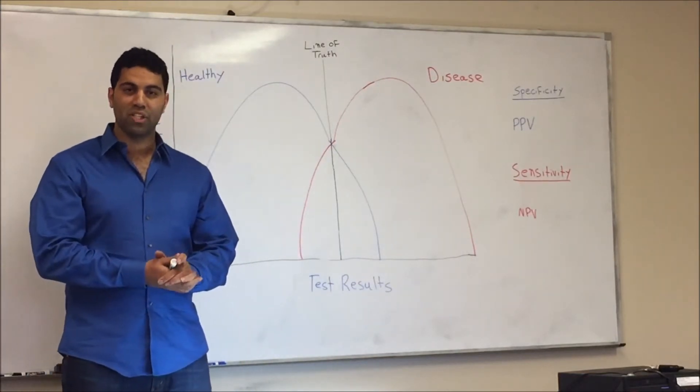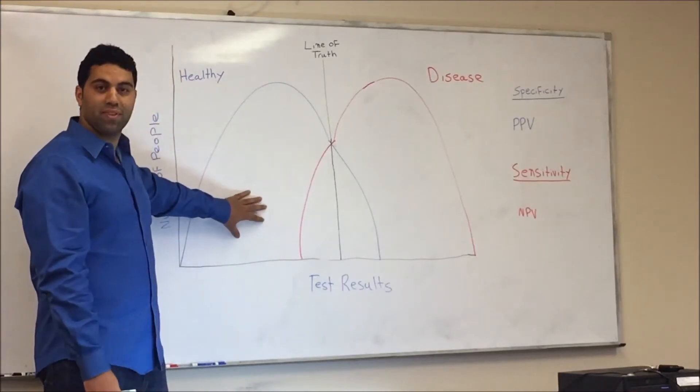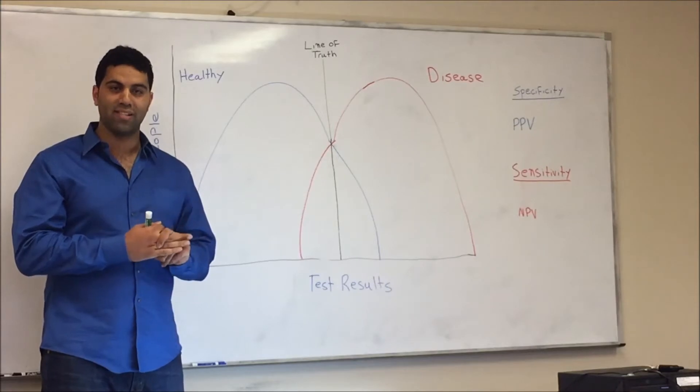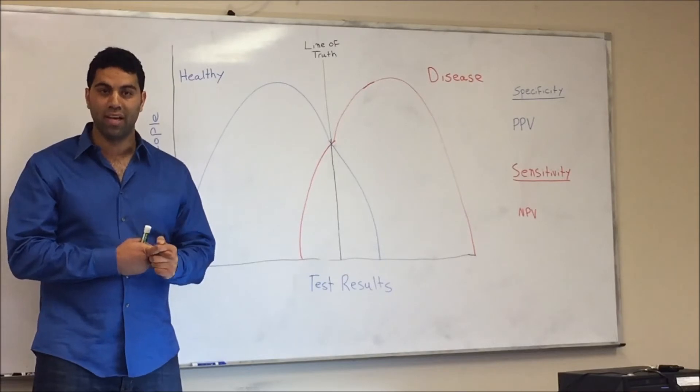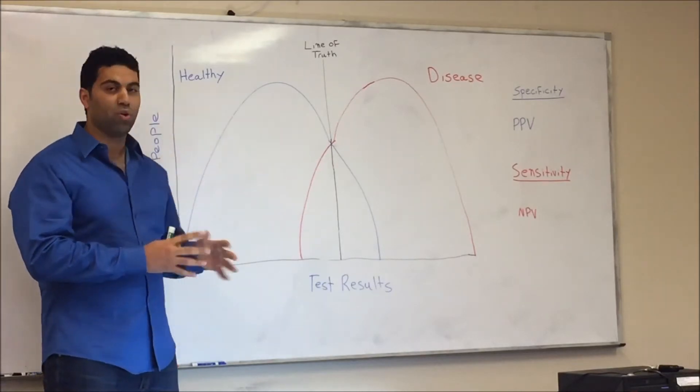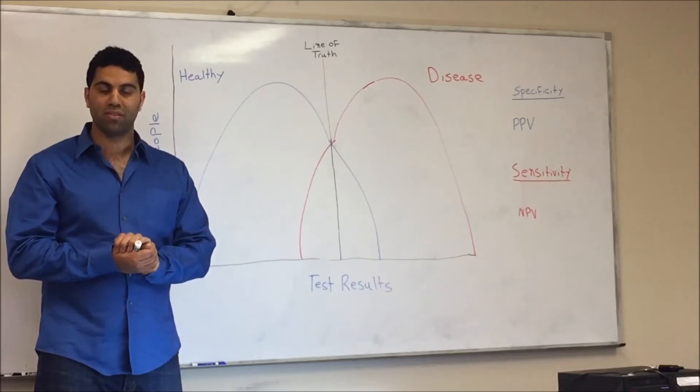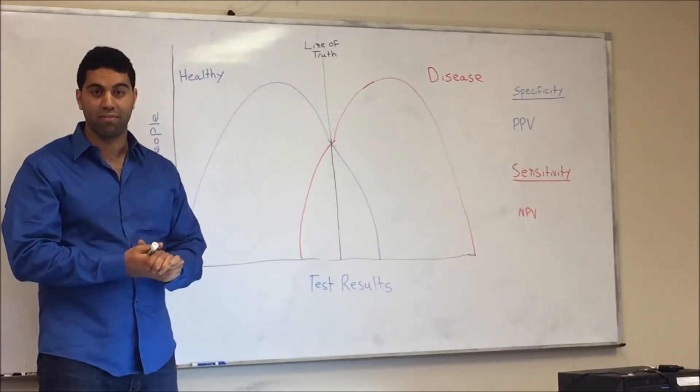So today I'll be talking to you about such a high-level topic from biostatistics. It's going to be this graph that concerns specificity and sensitivity, as well as positive predictive value, PPV, and negative predictive value, NPV. This graph is actually seen on too many questions. When you've asked questions, as well as your similes. So my job today is to make it really easy for you to answer any question regarding this graph.